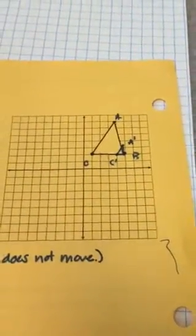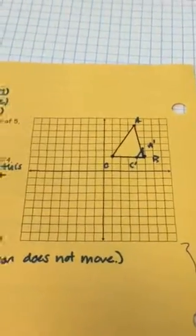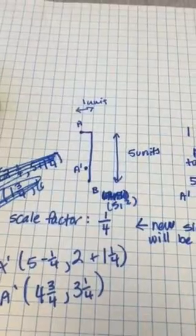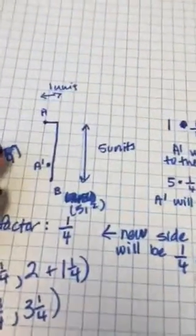A and C, however, will either move further away from B or closer to B, depending on the scale factor. Since the scale factor is not greater than 1, they're going to move closer to B. So let's take a look at this.